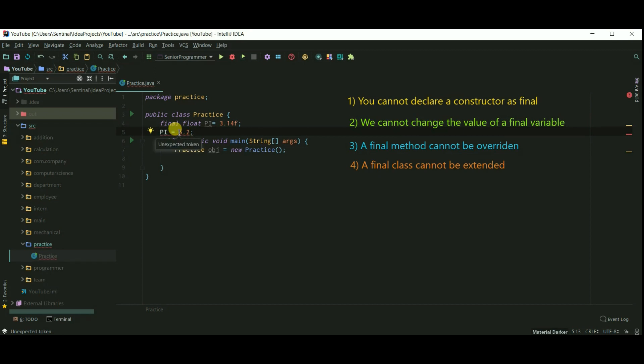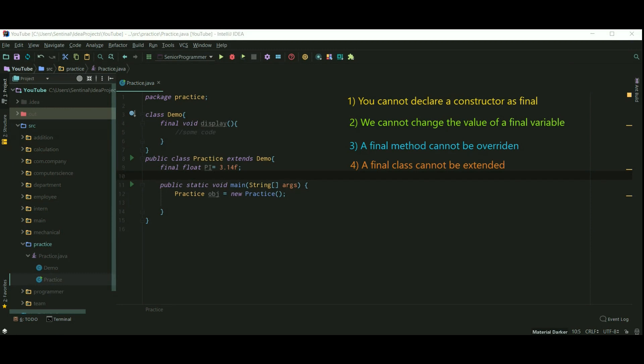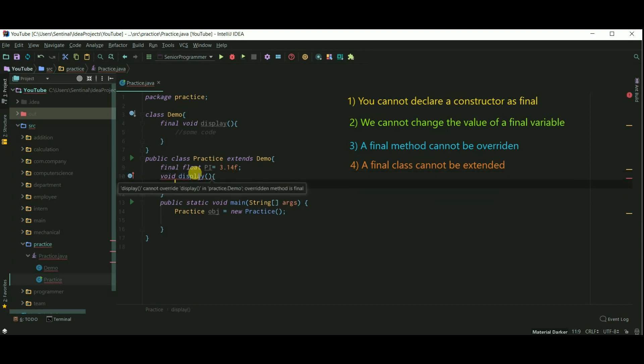A final method cannot be overridden. Here I have created a final method display in class Demo. If I try to override display in the Practice class, we will get an error that we cannot override display.